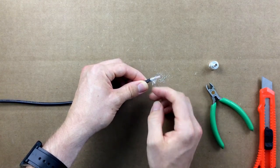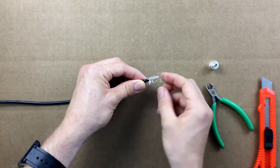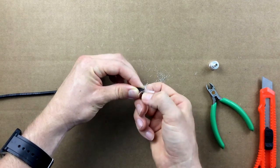Begin spreading apart the braided shield of the coax. Be sure when doing this that equal amounts of braid are spaced out around the coax.